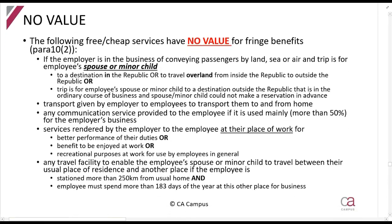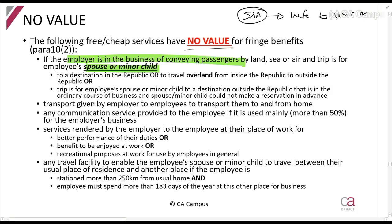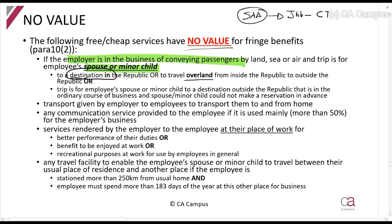There is no value for the following fringe benefits: if the employer is in the business of conveying passengers and the trip is for the spouse or minor child. For example, I work for SAA and SAA allows my wife to fly from Johannesburg to Cape Town for free. If this is a destination within the Republic, or if you can travel overland from inside to outside the Republic, or if it is a trip for an employee's spouse or minor child outside the Republic, then it will be null.